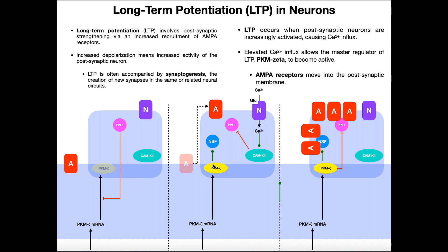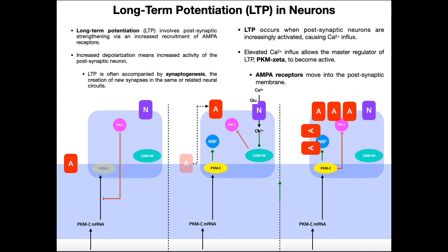PKM-zeta is the master regulator of long-term potentiation because it's going to indirectly get AMPA receptors to move from the periphery directly into the area where we have the synapse — the postsynaptic membrane. PKM-zeta activates another protein called NSF. NSF moves around, picks up the AMPA receptor, and drags it into the correct position. It does this multiple times, and this is actually a graded type of response — not all or nothing. A little calcium influx gives a little AMPA receptor migration; a lot of calcium influx gives a whole bunch of AMPA receptors in the membrane.